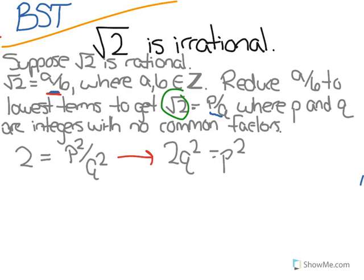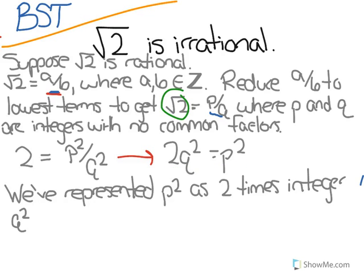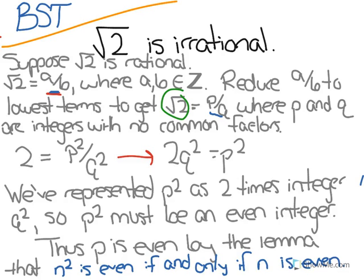So now, we've expressed p squared as 2 times the integer q squared. So that means by definition of an even integer, p squared must be an even integer. Thus, we know that p must also be even by the lemma, which is sort of like a theorem or a definition, but it's smaller, that n squared is even if and only if n is even. So essentially, if p squared is even, that means p must also be even.